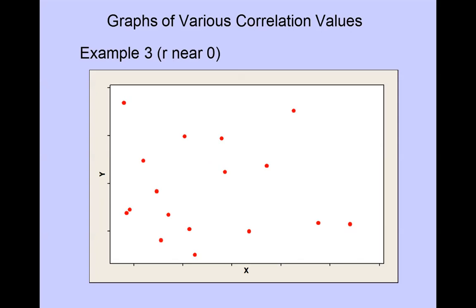In this case there doesn't seem to be any clear pattern between x and y. We would expect the correlation value to be near 0 for this scatter plot.